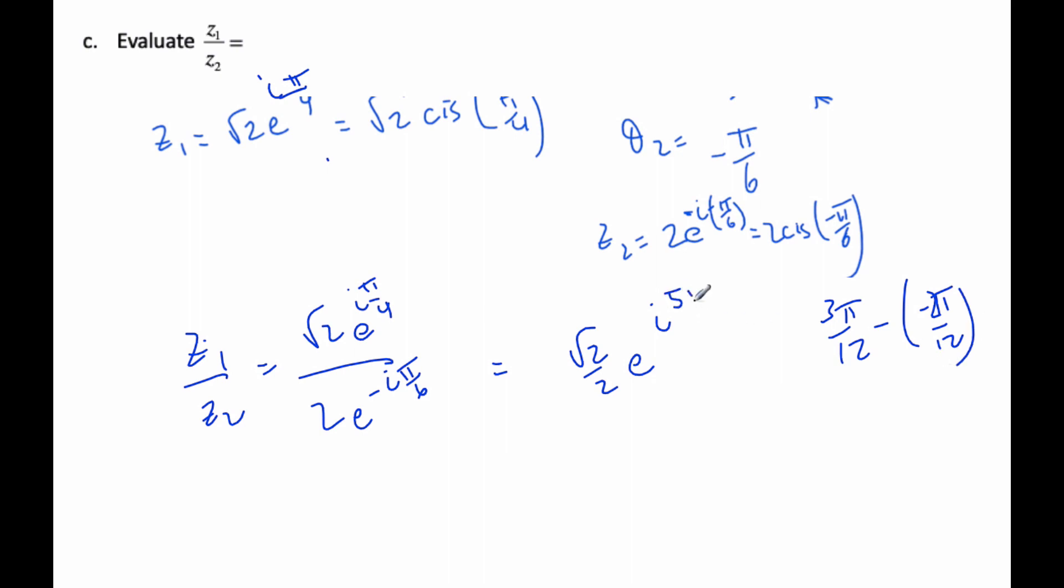and so I get 5 pi by 12, and this is my complex number in Euler's form.